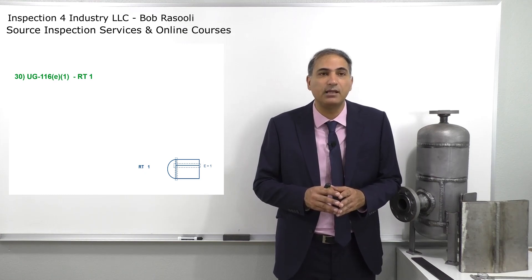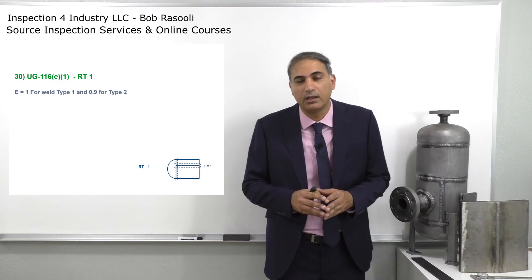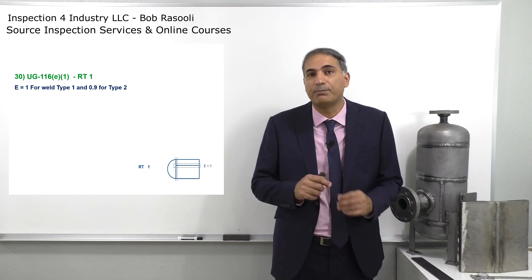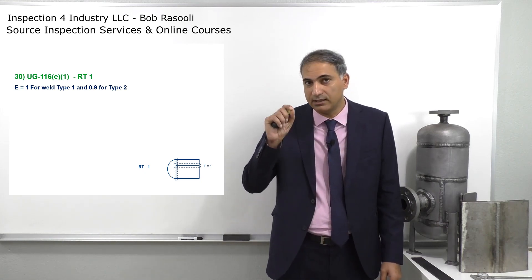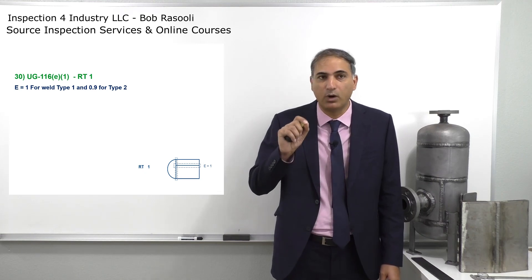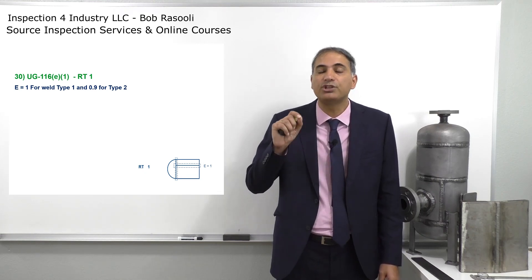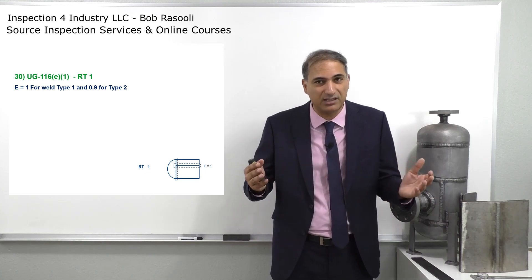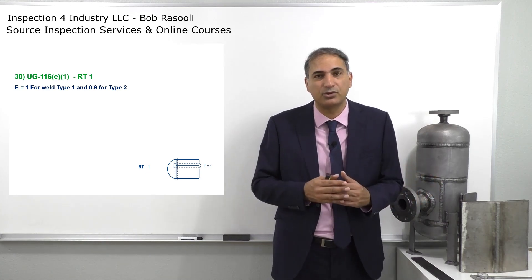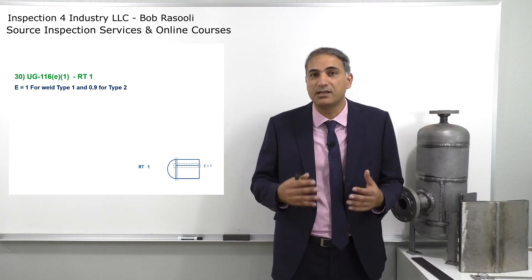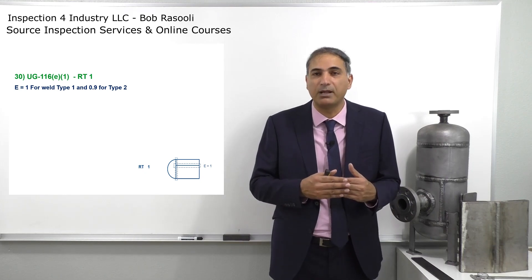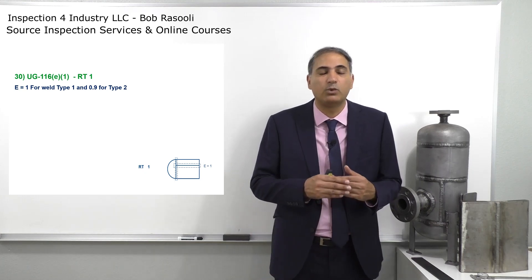One of the code items is UG-116(e)(1) for RT1. What is the definition of RT1? RT1 means you are putting joint efficiency E=1 in a design formula, using number one for weld type number one and 0.9 for weld type number two — the one with the backing strip. Weld type number two is not used anymore; I haven't seen it used in the last 10 years. Normally we go with weld type number one, so if E=1 with weld type number one, it's RT1.